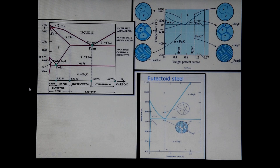The region to the left of the eutectoid point is called the hypoeutectoid, and the region to the right of the eutectoid is called the hypereutectoid.